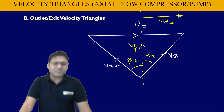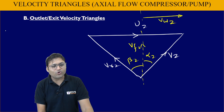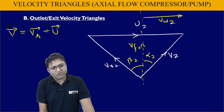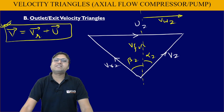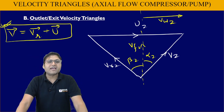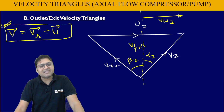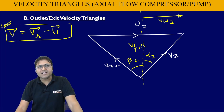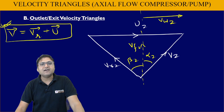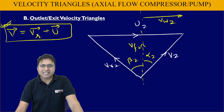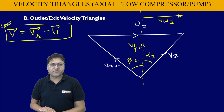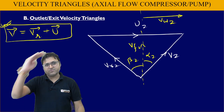This is how you can draw the velocity triangles. The key principle is that absolute velocity is the vector addition of relative velocity plus blade velocity — this is the common relationship in all diagrams. Once you can draw the diagram and understand these angles, you will be able to write all trigonometric and geometric relations correctly and analyze these equipment. Thanks for watching this video. See you in the next one. Jai Hind.